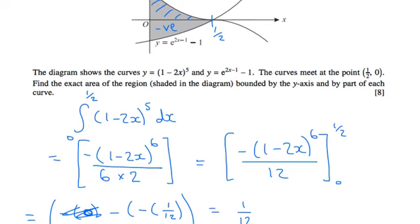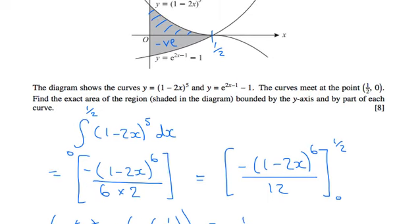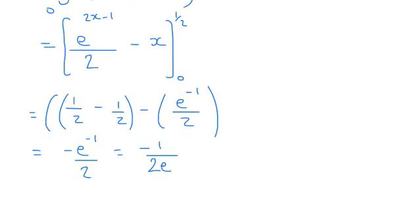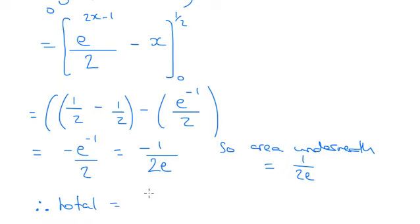And therefore, the total area is the 1 over 2e plus the 1/12 from the top.